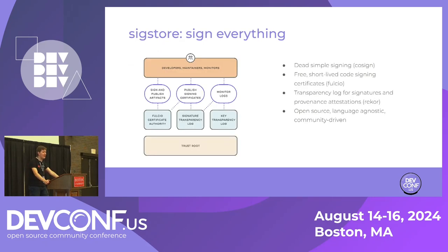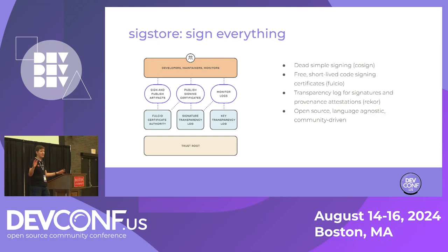Sigstore came onto the scene in late 2020, early 2021. Its goal was really just to make signing as easy as possible, as accessible as possible. And by and large, it succeeded. It introduced a suite of pretty well-designed software tools, and it's been pretty successful — a lot of adoption across the industry and a lot of collaboration from partners. Sigstore is awesome, but today we're really going to focus on Cosign, which is really just the signing aspect of it.